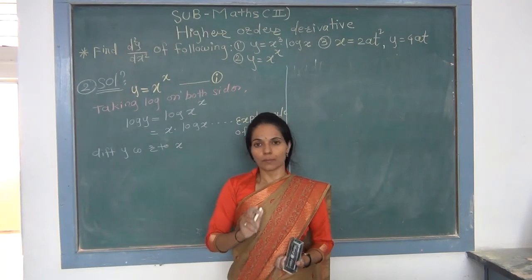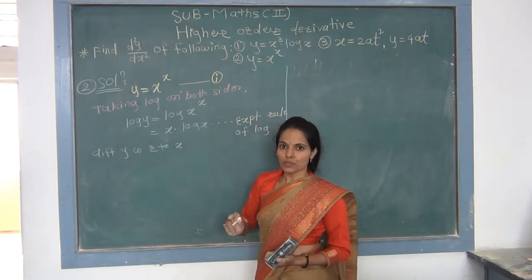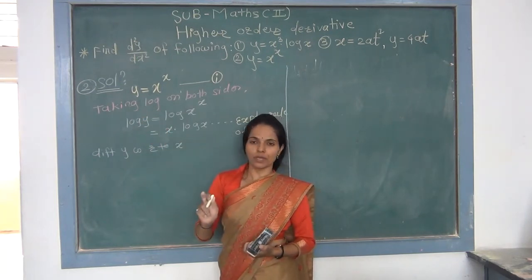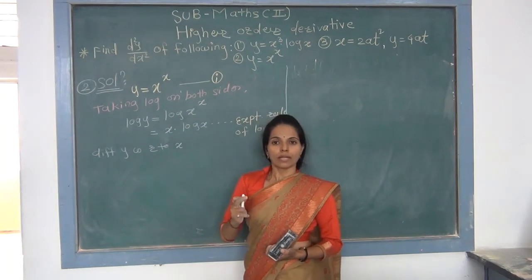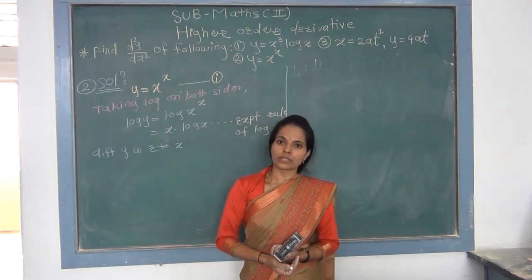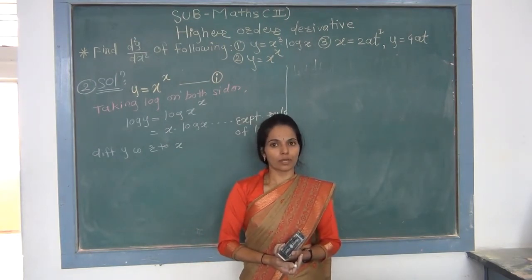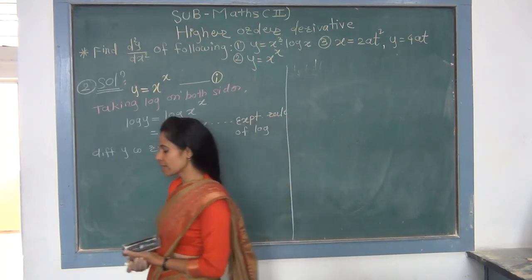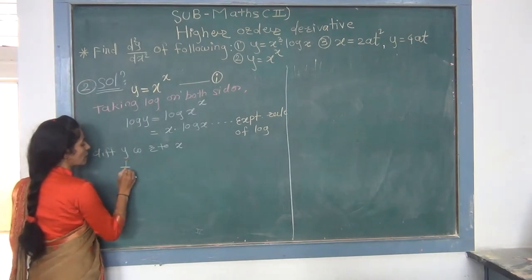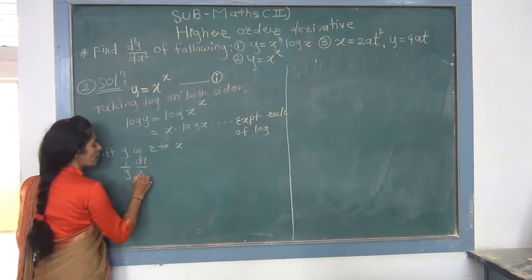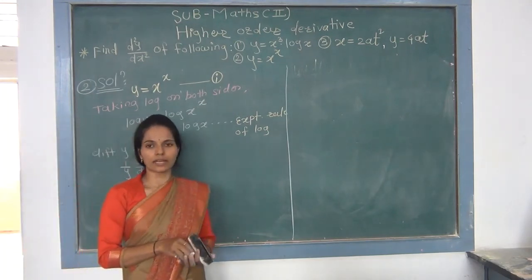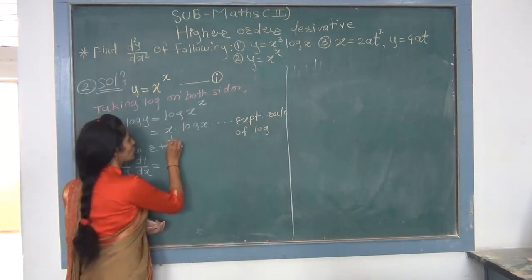Since we need d²y/dx², we differentiate dy/dx = 1/t with respect to x again. Writing 1/t as t^(-1) and differentiating with respect to x — since t is a function of x this is a composite function — we apply the chain rule: derivative is (-1)·t^(-2)·(dt/dx), giving d²y/dx² = -t^(-2)·(dt/dx).